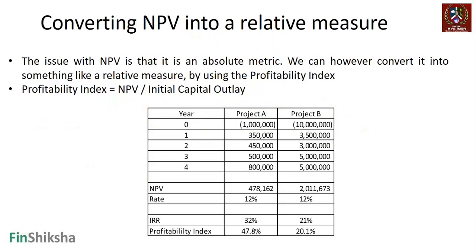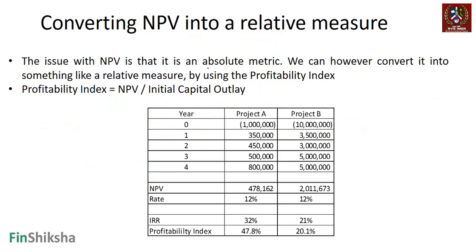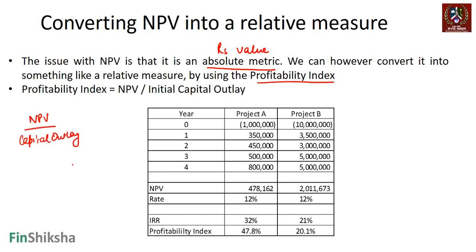Remember that NPV is an absolute metric giving a rupee value — how much money you generate by taking a project. We can convert it to a relative measure using what is called the Profitability Index. You take the NPV and divide it by your initial capital outlay — how much money did you put in versus how much did you make out of the project.